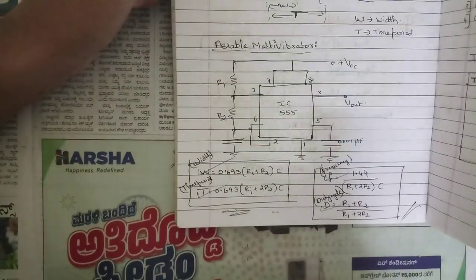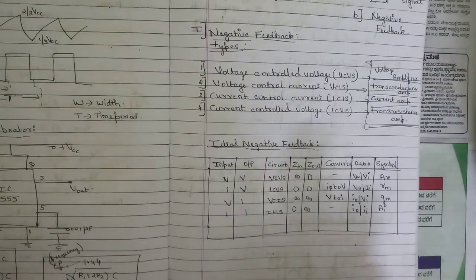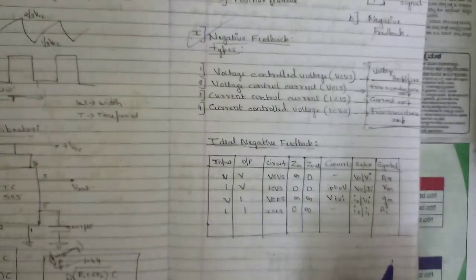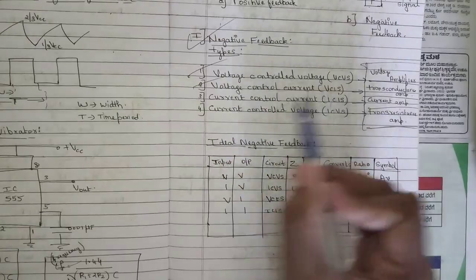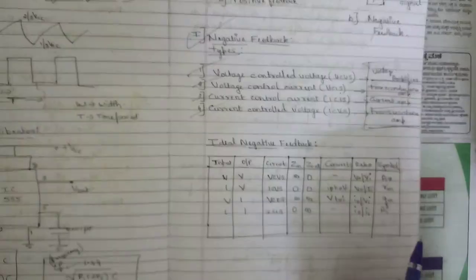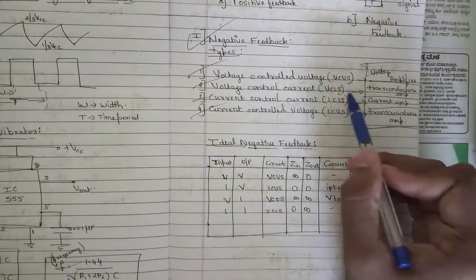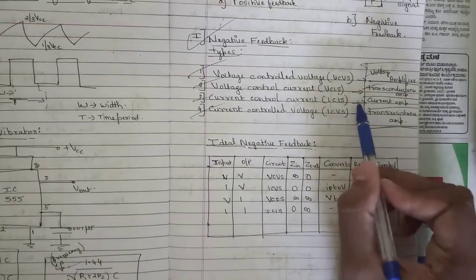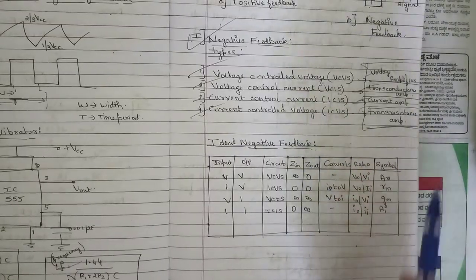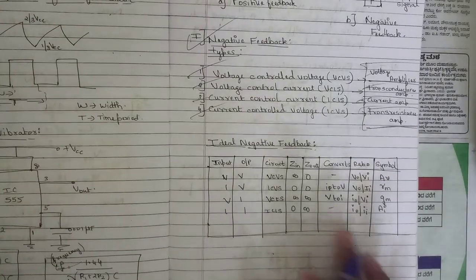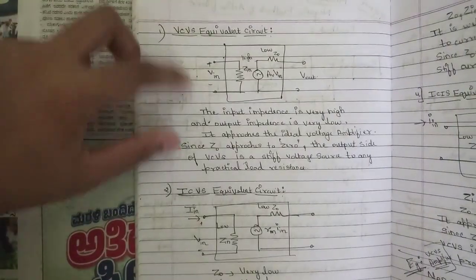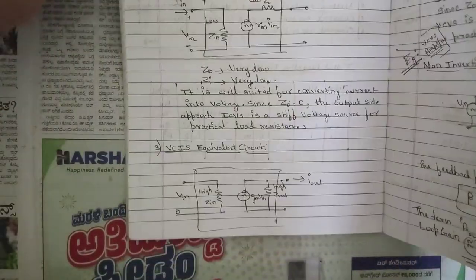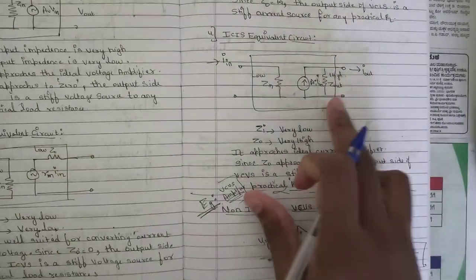One question on types of negative feedback will be asked. There are four types: VCVS (voltage-controlled voltage source) — voltage amplifier; VCIS (voltage-controlled current source) — transconductance amplifier; ICIS (current-controlled current source) — current amplifier; ICVS (current-controlled voltage source) — transresistance amplifier. Note the conditions and equivalent circuits for all four types.